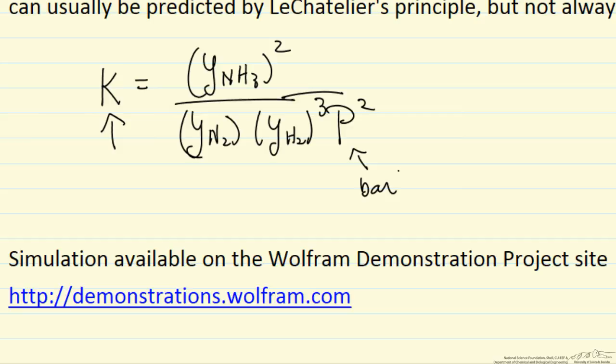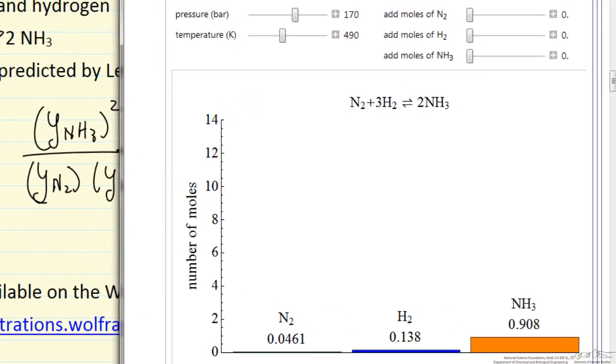So let's look at the simulation. What I'm showing is essentially a bar graph of the number of moles of nitrogen, hydrogen, and ammonia at equilibrium. This is the case where we added one mole of ammonia, and for a given pressure and temperature, let it go to equilibrium, and this is the number of moles at equilibrium from that one mole.